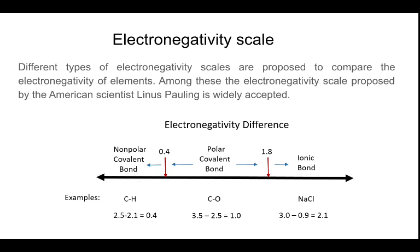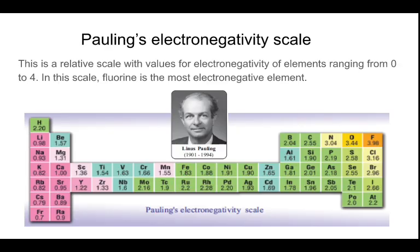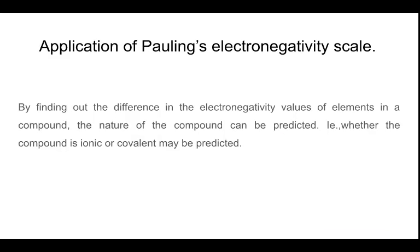Different types of electronegativity scales have been proposed to compare the electronegativity of elements. Among these, the electronegativity scale proposed by the American scientist Linus Pauling is widely accepted. This is a relative scale with values for electronegativity of elements ranging from 0 to 4. In the scale, fluorine is the most electronegative element.